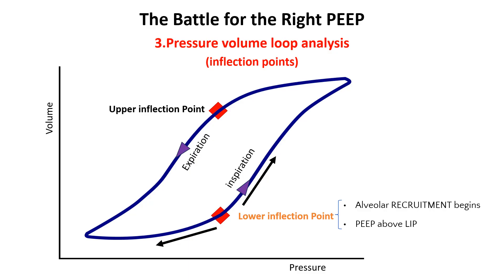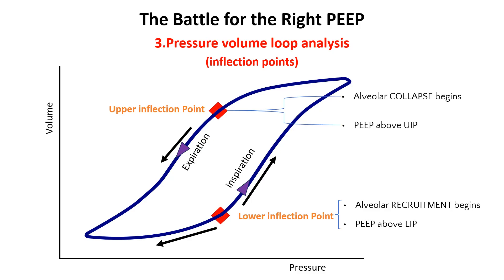The other method is the identification of the upper inflection point on the deflection or expiratory limb of the pressure-volume loop. The deflection limb represents the exhalation phase, where lung volume decreases as air is expelled. The upper inflection point on this limb marks the pressure below which alveolar collapse begins, so setting PEEP above this point helps prevent derecruitment and maintain lung volume. There are other methods to identify optimal PEEP but they are beyond the scope of this video.